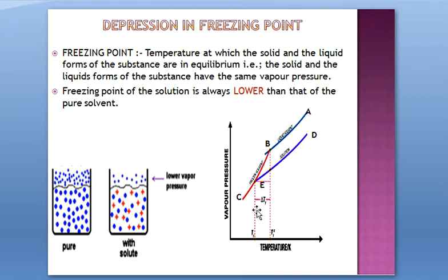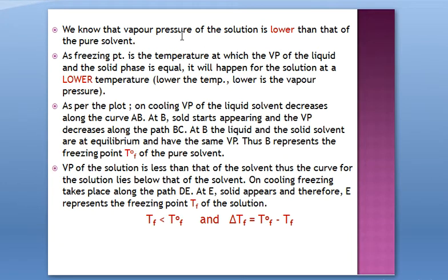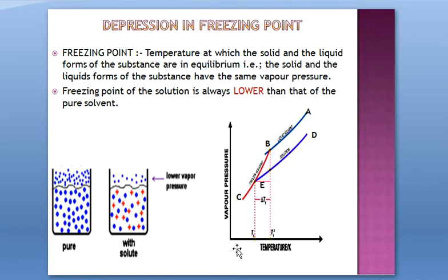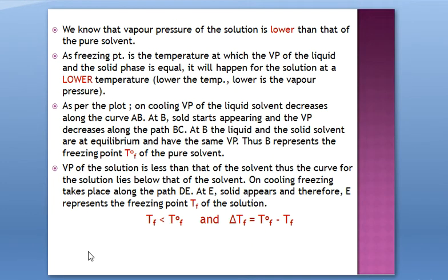As you can clearly see on the temperature axis, Tf is less than T°f. T°f is the freezing point of the solvent, Tf is the freezing point of the solution. This is how vapor pressure affects the freezing point. Since the solution's freezing point is lower, there is a change — a depression. That is why we call it depression in freezing point. Delta Tf, the depression in freezing point, is equal to T°f minus Tf.